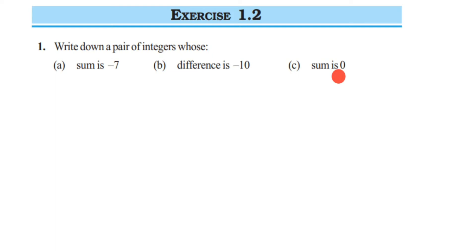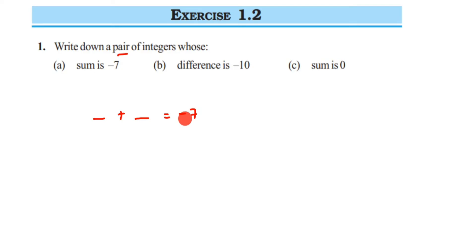The first sub-question asks for a pair of integers whose sum is minus 7. A pair means two numbers. When you add them, the result should be minus 7 — a negative answer. Remember the rule: when you add two integers with the same sign, the final answer has the same sign. If you take one positive and one negative, make sure the greater number is negative, since the final answer is negative.